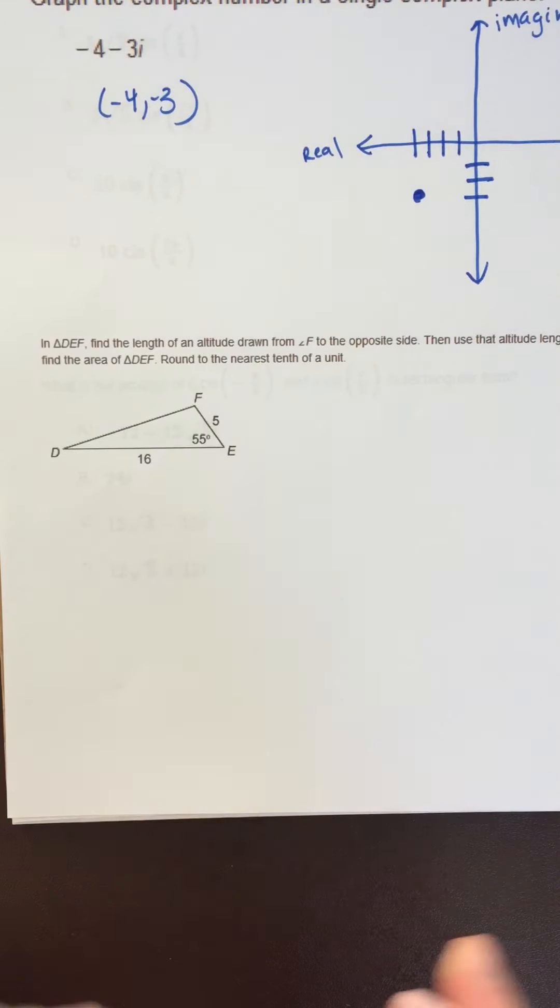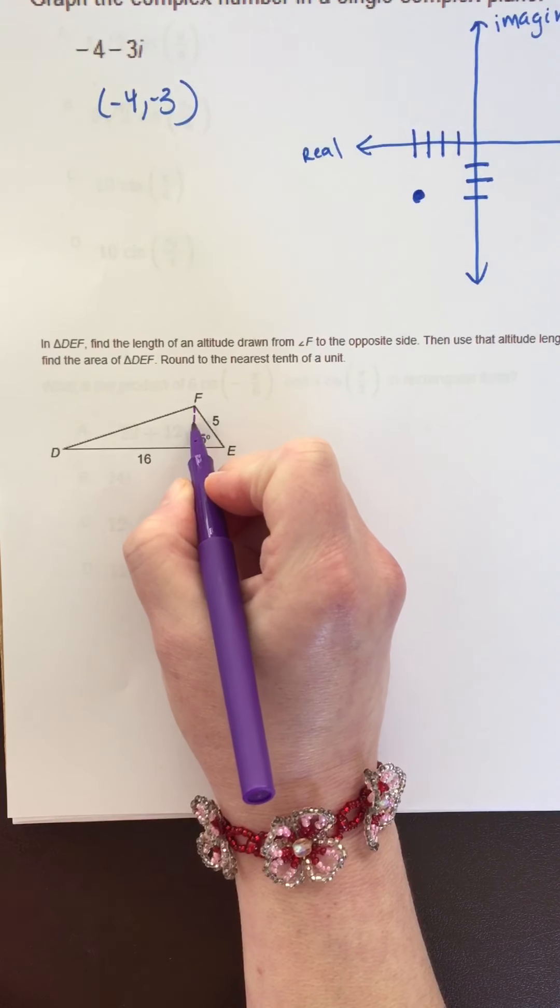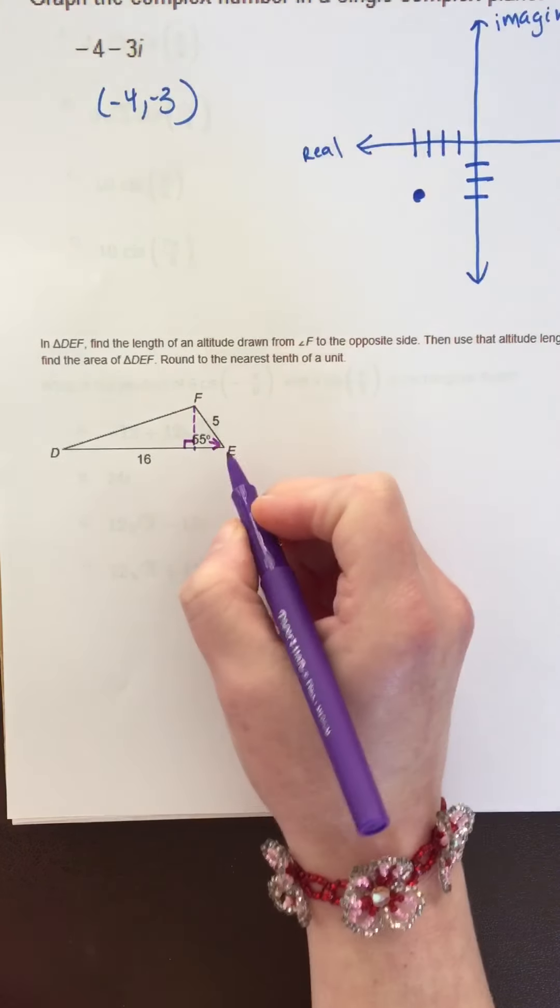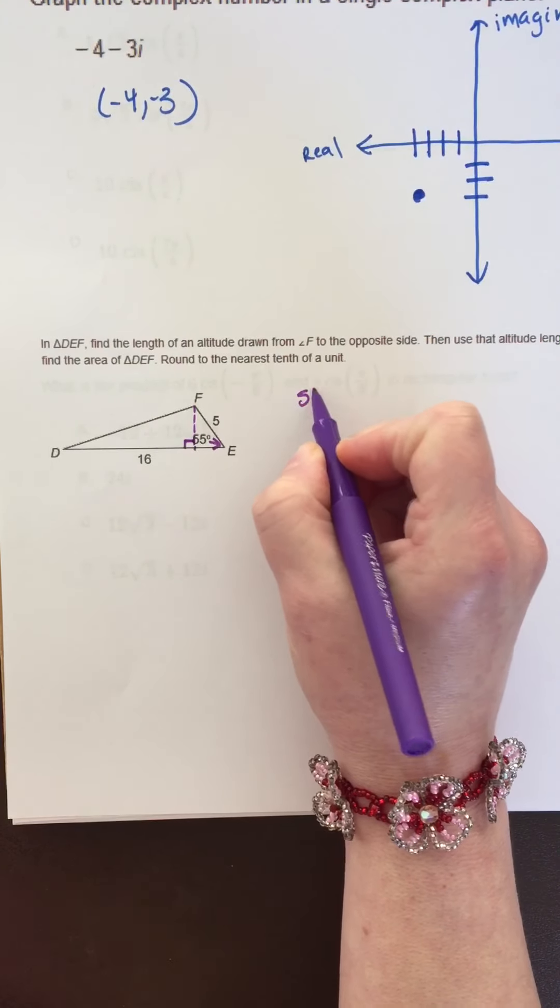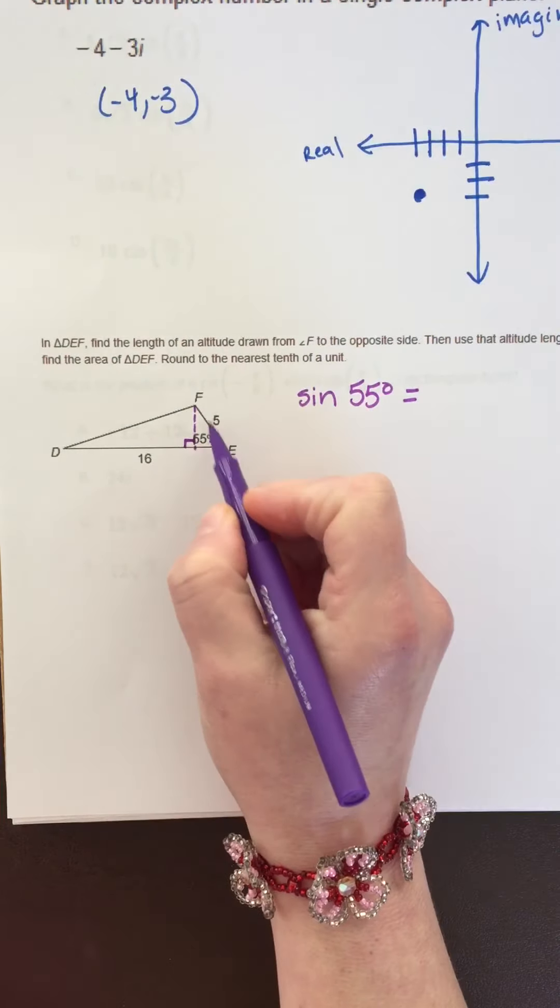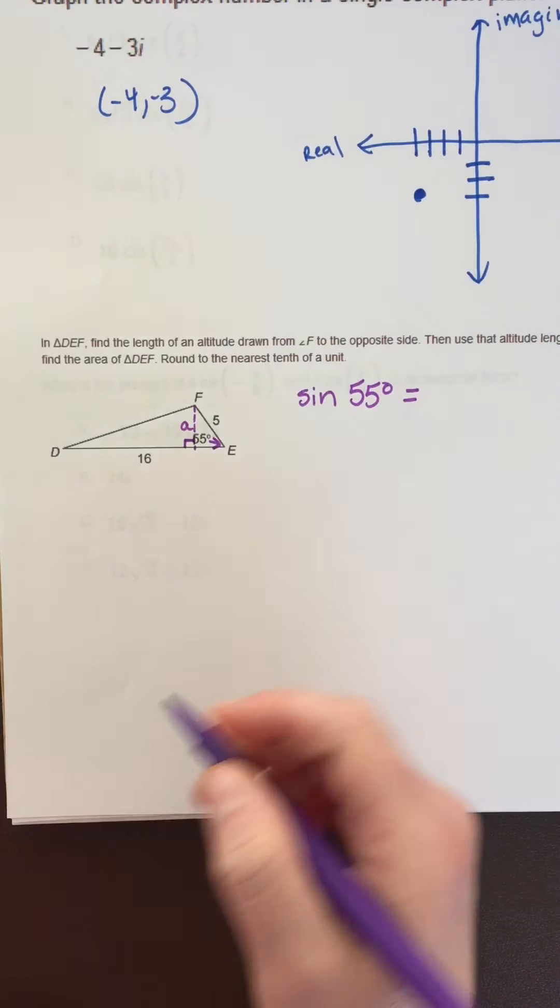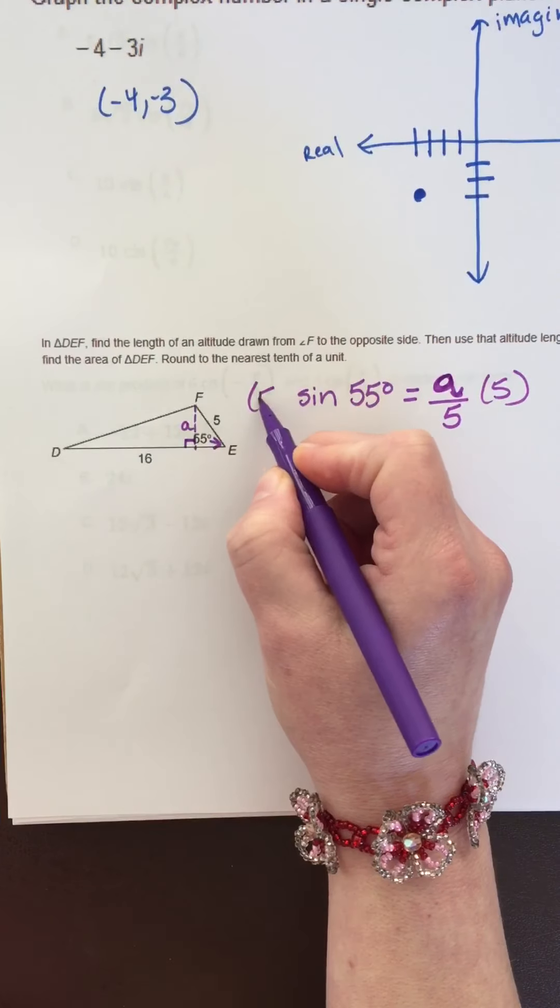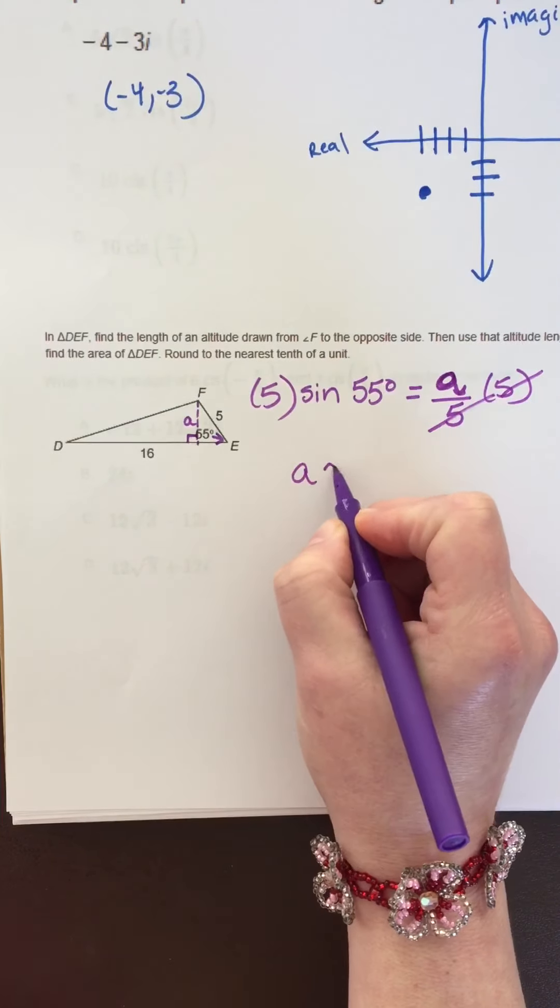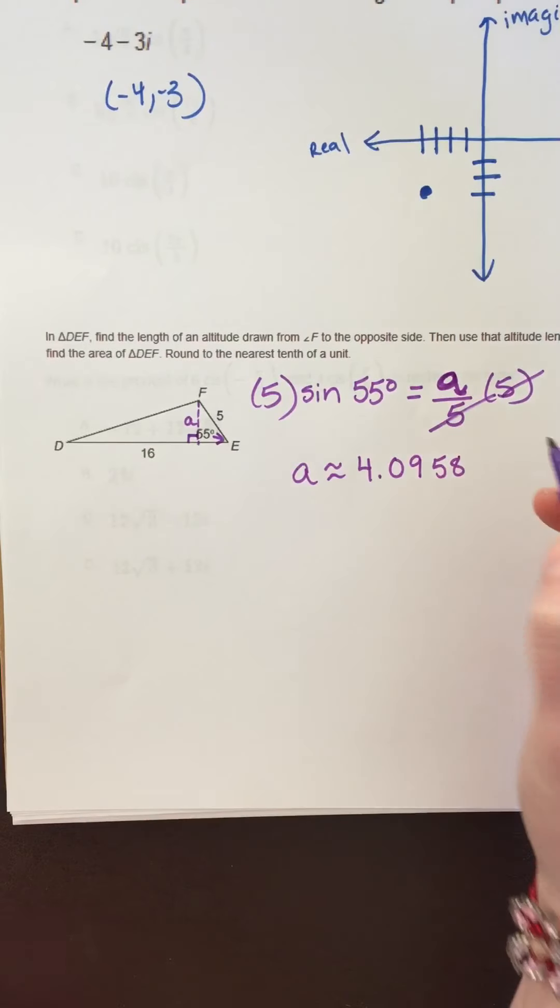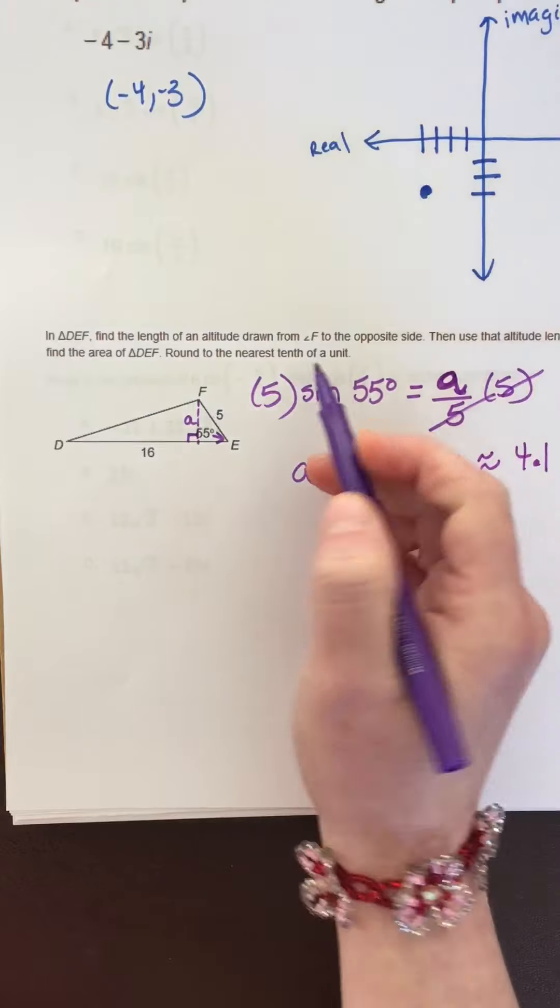Let's look at this one. It wants you to find the length of the altitude. I'm going to draw the altitude straight down here, and that creates a right triangle. They give you this angle, so I'm going to use sine. The sine of 55 degrees equals, remember sine is opposite over hypotenuse. The opposite is the altitude you're looking for, let's call it A, and the hypotenuse is 5. Multiply both sides by 5, put that in the calculator, and you get 4.0958, which is about 4.1.